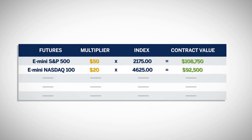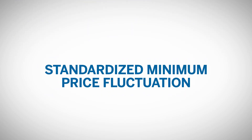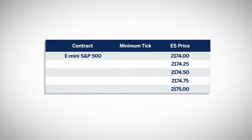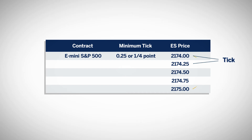Additionally, every Equity Index Futures contract has a standardized minimum price fluctuation, also known as a tick. The tick value is the minimum price movement, either up or down, that can occur with each futures contract. For example, E-mini S&P 500 Futures have a minimum price fluctuation of 0.25 index points, or a quarter of an index point. Therefore, one tick in the E-mini S&P 500 is one quarter of one point. Since a full point movement is worth $50, a quarter point movement is worth $12.50.